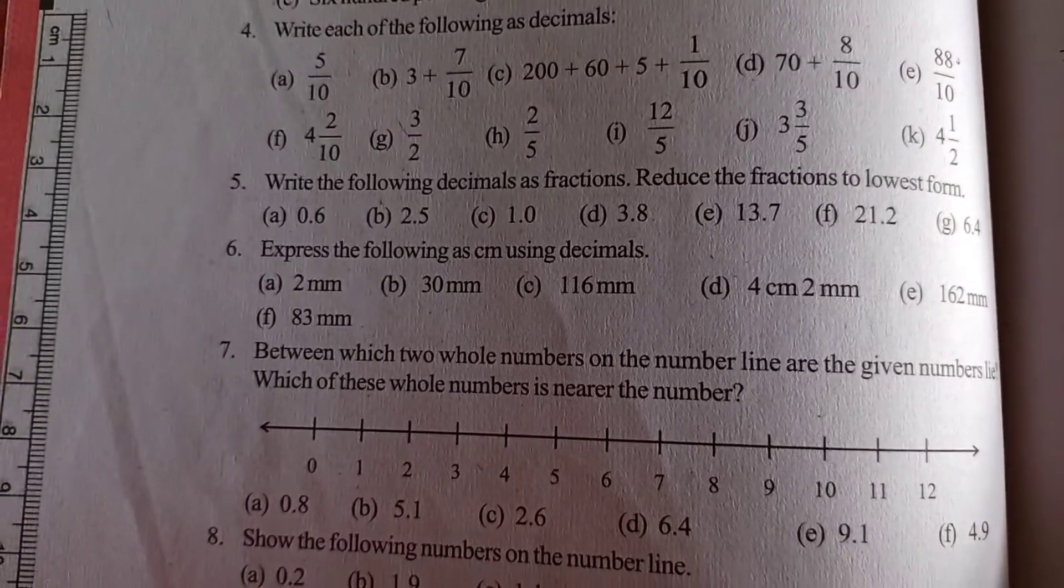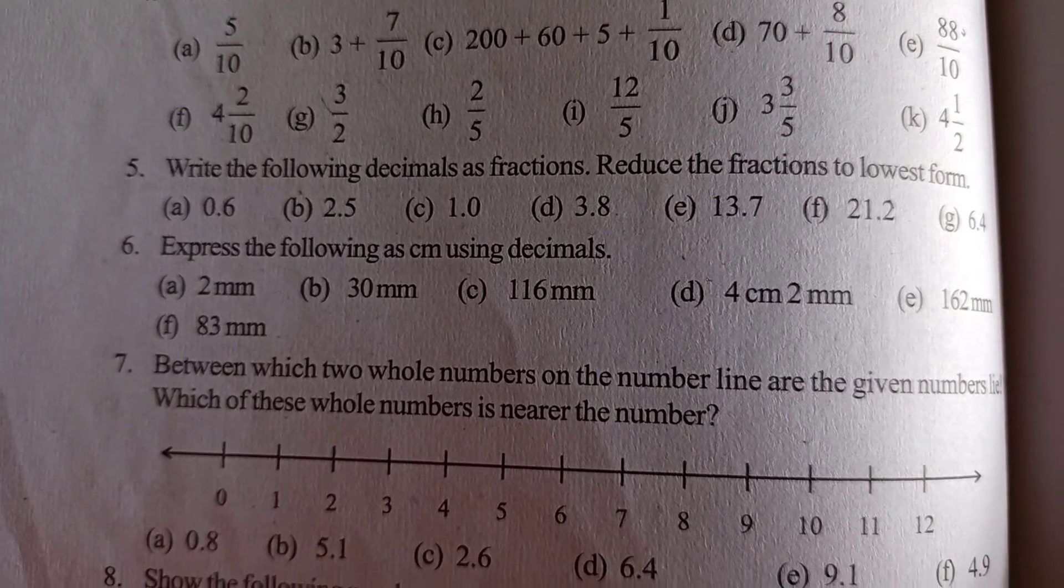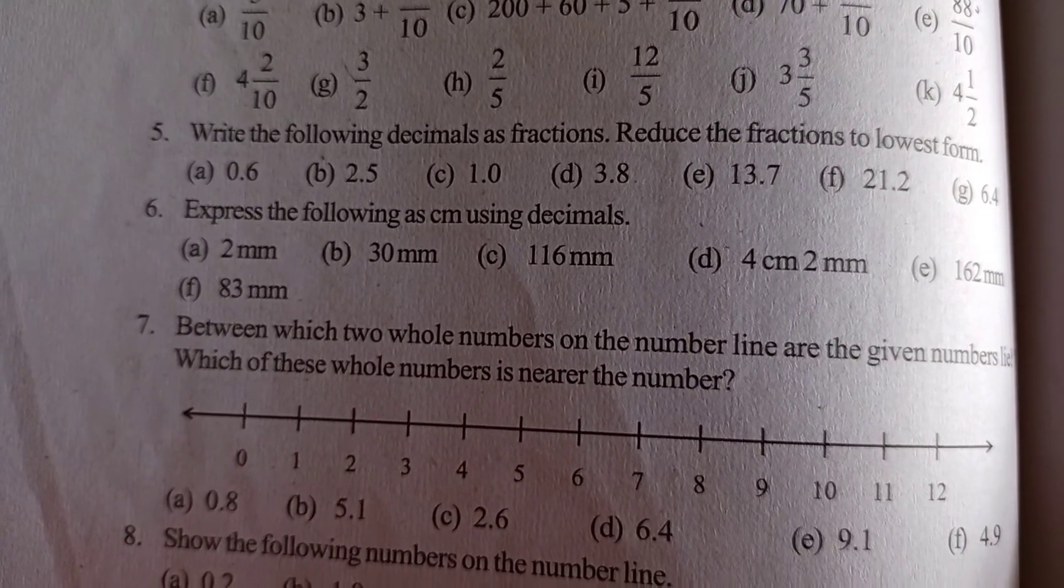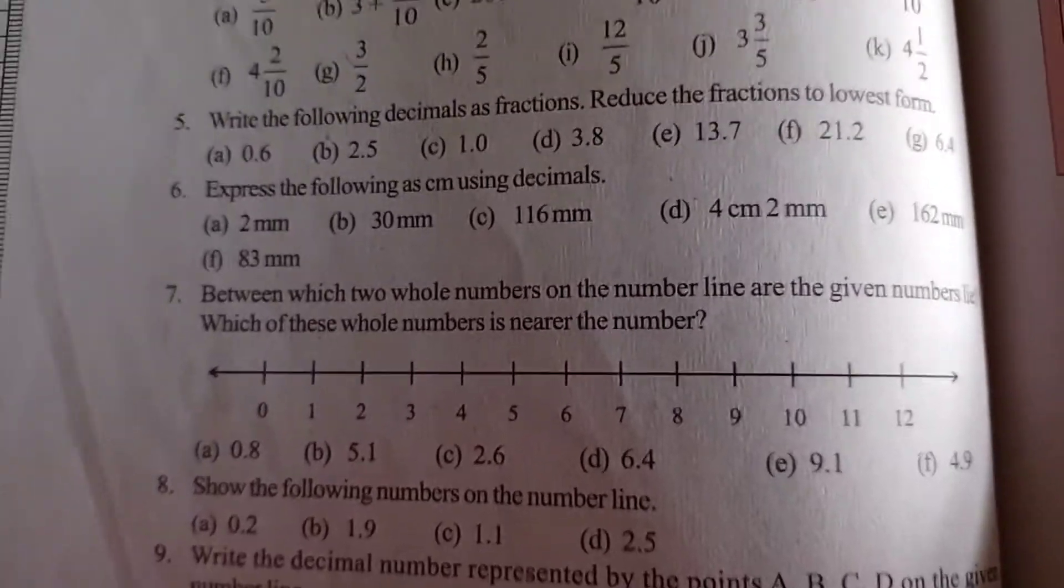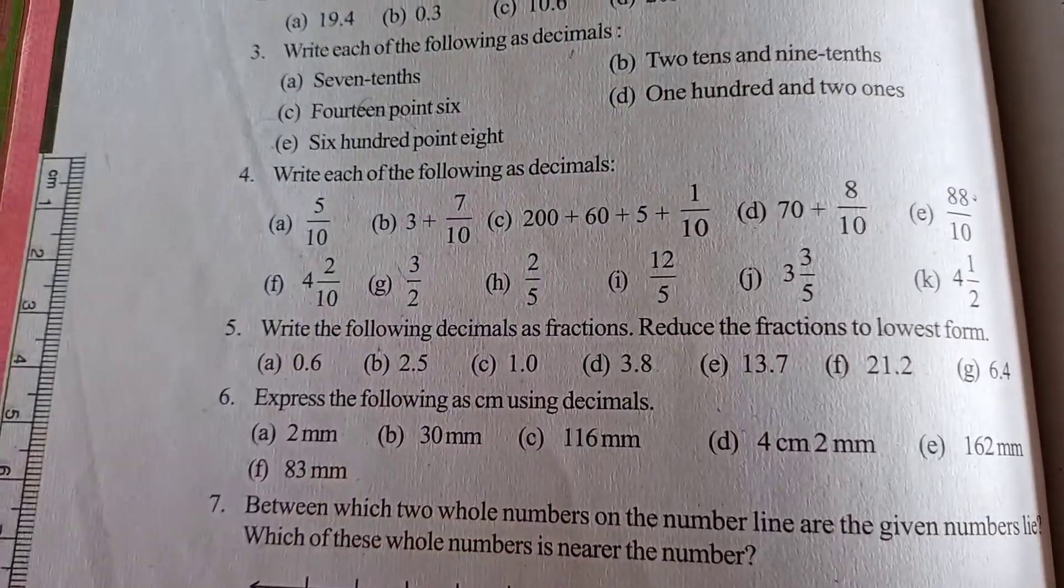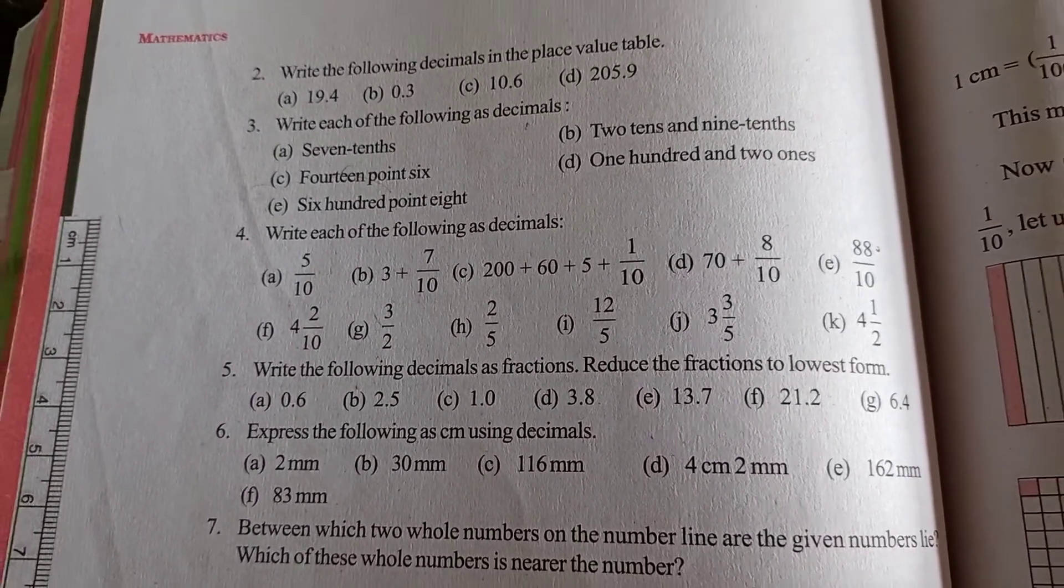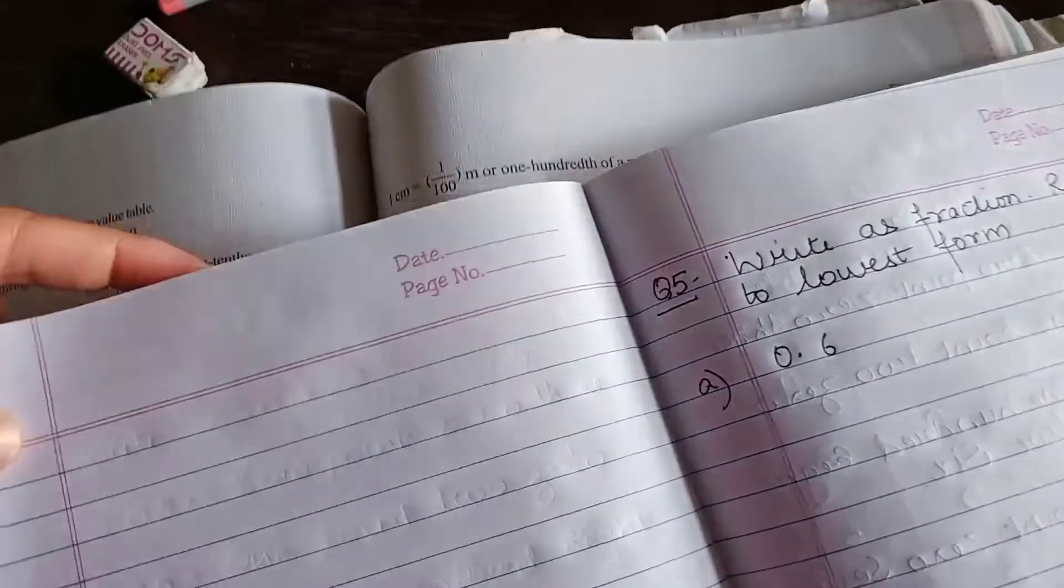Question number 5. Write the following decimals as fraction and then reduce the fraction to lowest form. Here in this question you are supposed to do two things. One is to convert this decimal to fraction, and then the second thing is to convert that fraction to the lowest form. So how to do it?